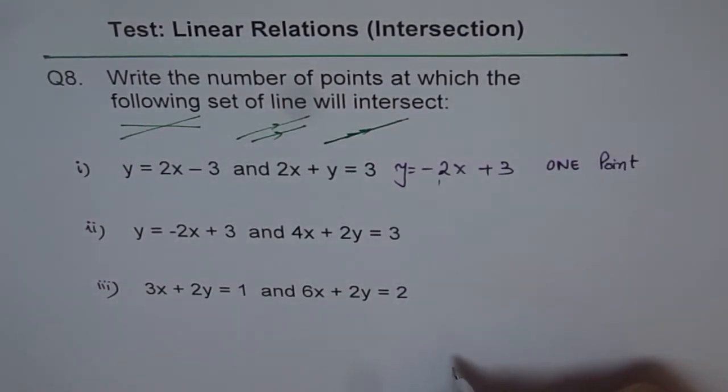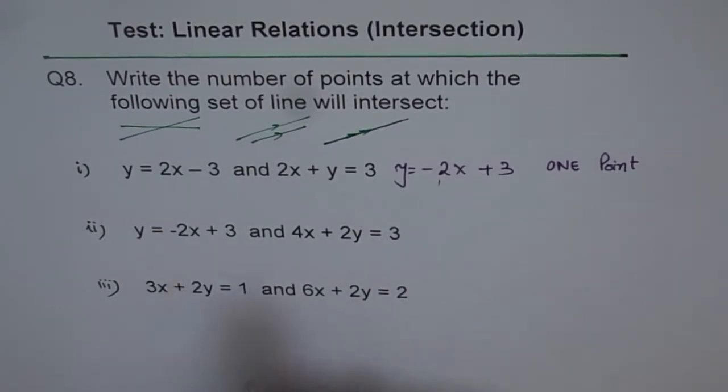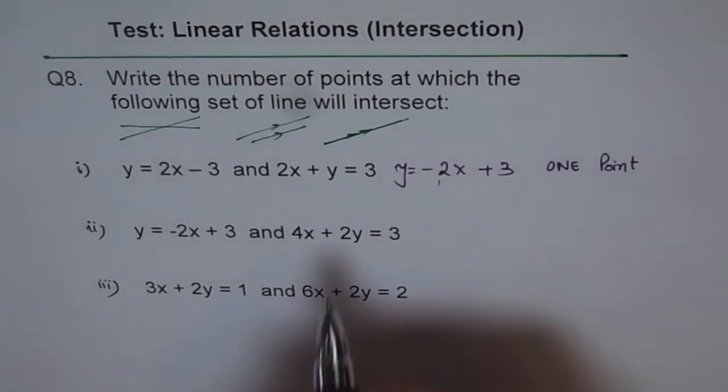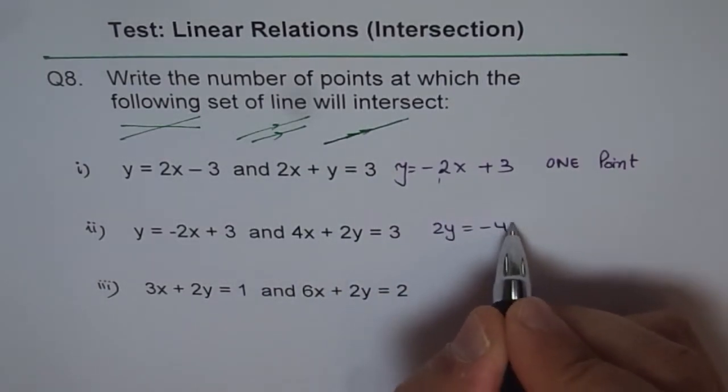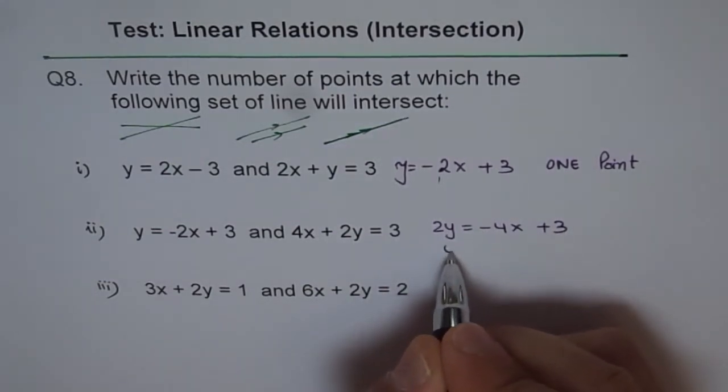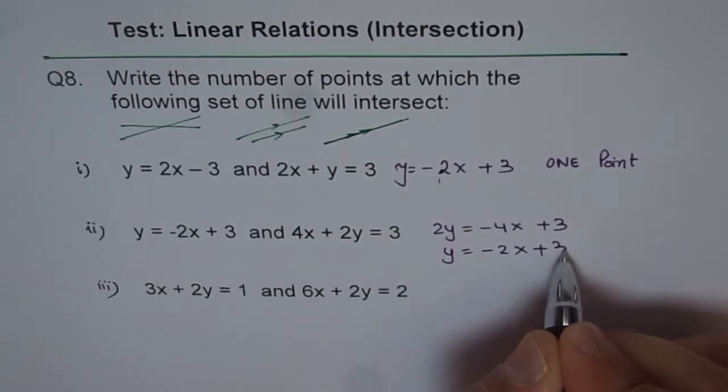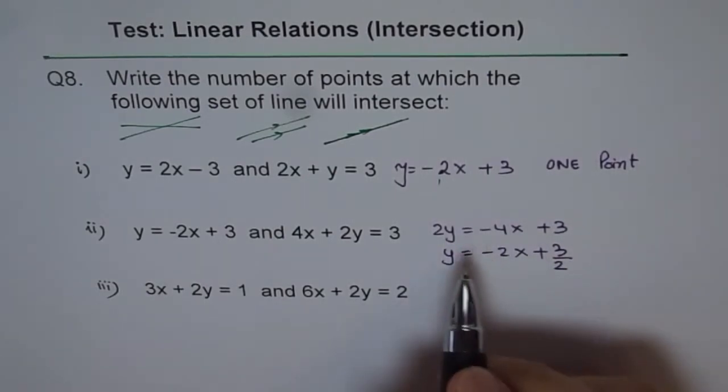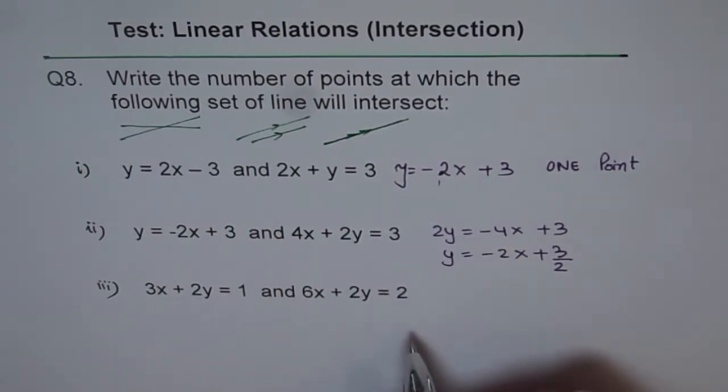Now the next one. We know the slope of the first line is minus 2. Let's figure out this line. So we will rearrange. So we will write 2y equals minus 4x plus 3. And then we will divide by 2 and get y equals minus 2x plus 3 over 2. So we divided by 2. 4 divided by 2 gave us 2. There was minus sign here which we retained.